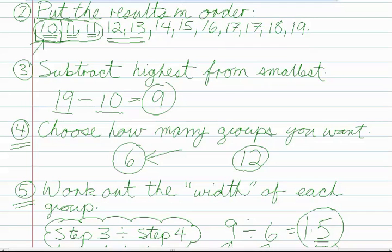In step two, we put all of the marks in order from smallest to largest, the smallest being ten and the largest being nineteen.